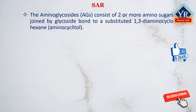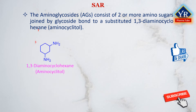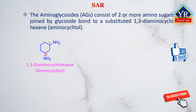The aminoglycosides consist of two or more amino sugars joined in glycosidic linkage to a highly substituted 1,3-diaminocyclohexane known as aminocyclitol, which is a centrally placed ring.